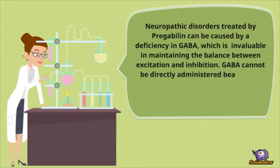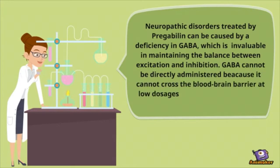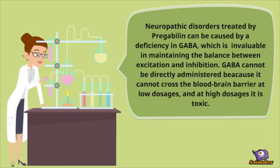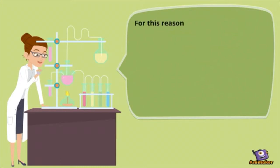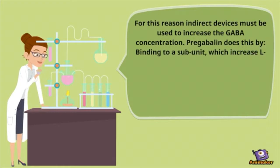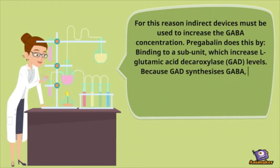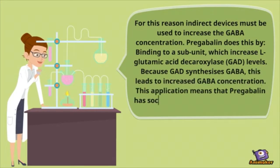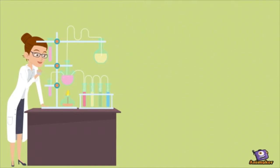GABA is invaluable in maintaining the balance between excitation and inhibition. GABA cannot be directly administered because it cannot cross the blood-brain barrier at low dosages, and at high dosages it is toxic. For this reason, indirect methods must be used to increase GABA concentration. Pregabalin does this by binding to a subunit which increases L-glutamic acid decarboxylase (GAD) levels, because GAD synthesizes GABA, leading to an increased GABA concentration. This application means that pregabalin has social utility and commercial promise.